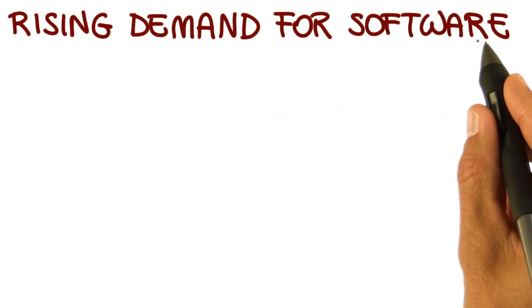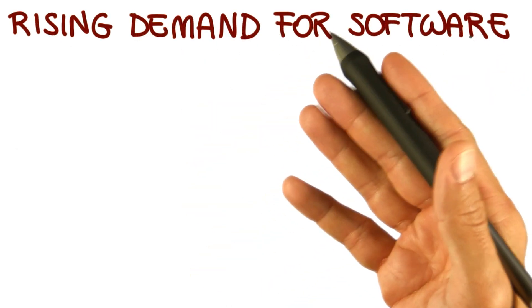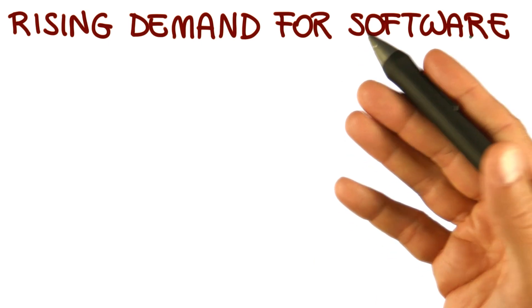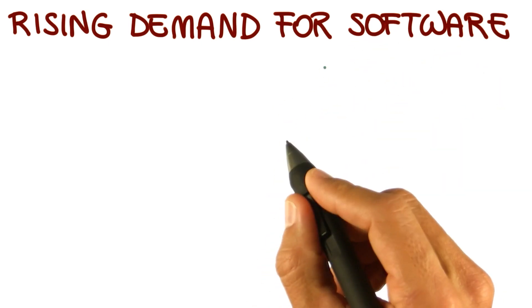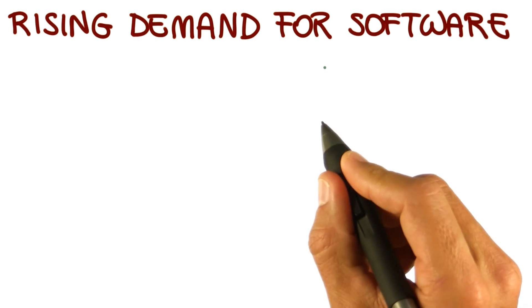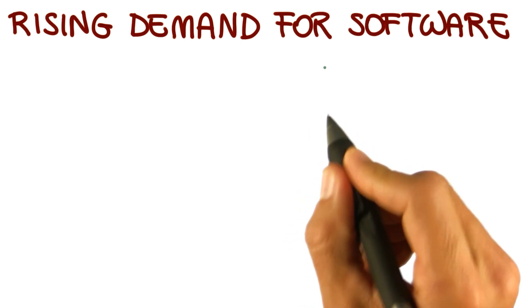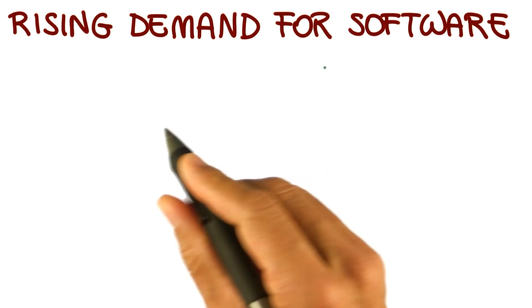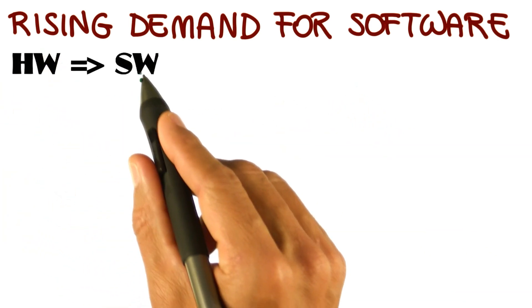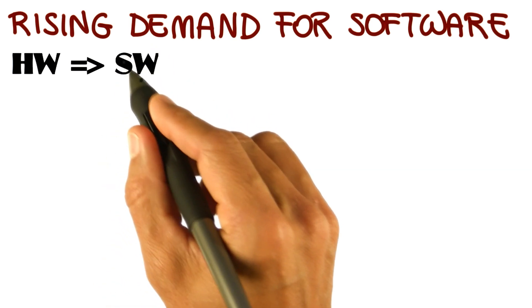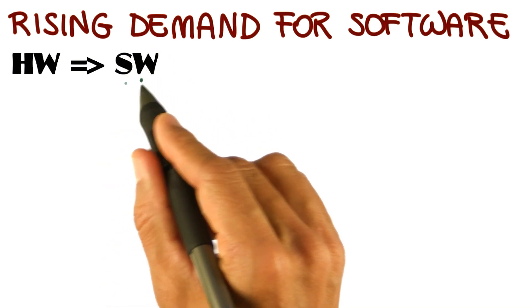The first cause was the rising demand for software. Now you're used to see software everywhere—in your phone, in your car, even in your washing machine. Before the 60s, however, the size and complexity of software was very limited and hardware components were really dominating the scene. Then things started to change and software started to become increasingly prevalent. So we moved from a situation where everything was mostly hardware to a situation in which software became more and more important.